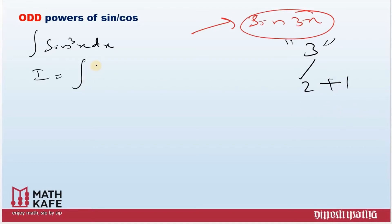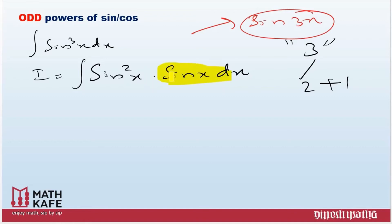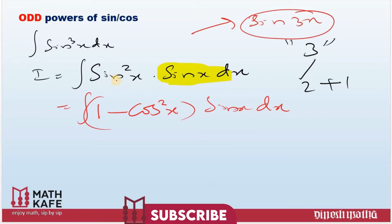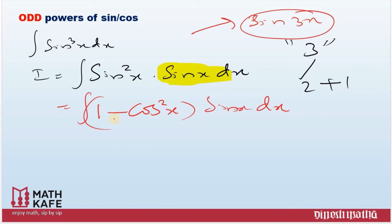The first step is changing sin³x as sin²x · sinx dx. Once you separate a single power, never touch that sinx dx term again. The next step is that sin²x should be changed using the basic identity as 1 - cos²x. So we have (1 - cos²x) · sinx dx. Whatever term comes here must be changed using the basic identity.